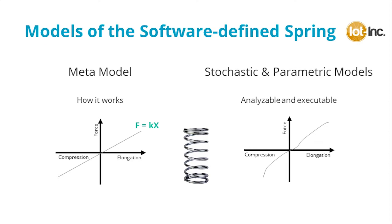Similar to metadata, the metamodel is a model about the models. This informs the analytics on how the model operates at a high level. For example, if gravity was involved, the metamodel would capture this so we don't have to statistically determine that we're observing gravity. If we want to analyze the spring, we use its raw data — but in an IoT system that can be hundreds of thousands or even millions of data points, making it impractical to compute. Therefore we come up with a stochastic model that represents, like a proxy, the raw data points.